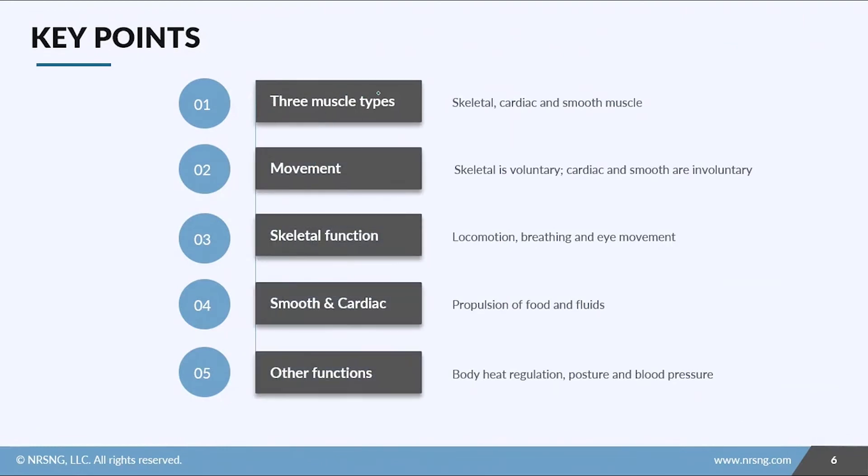Let's recap. You've got three muscle types: skeletal, cardiac, and smooth muscle. One of the cool functions of muscles is movement. Skeletal is voluntary and cardiac and smooth muscle are involuntary movements. When you talk about skeletal function, we're talking about locomotion, breathing, and eye movement. With smooth and cardiac muscle, we're talking about propelling food and fluid into the spaces they need to go. Other cool functions of muscle are body heat regulation, posture control, and blood pressure control.